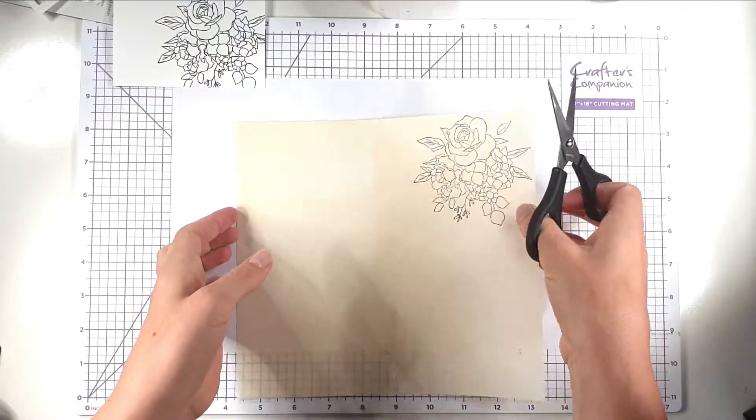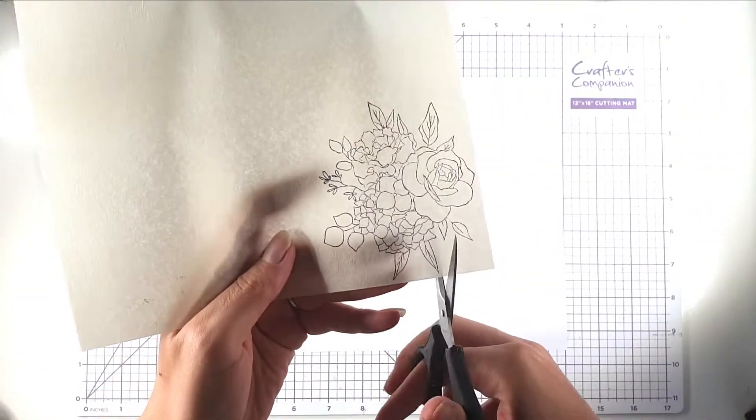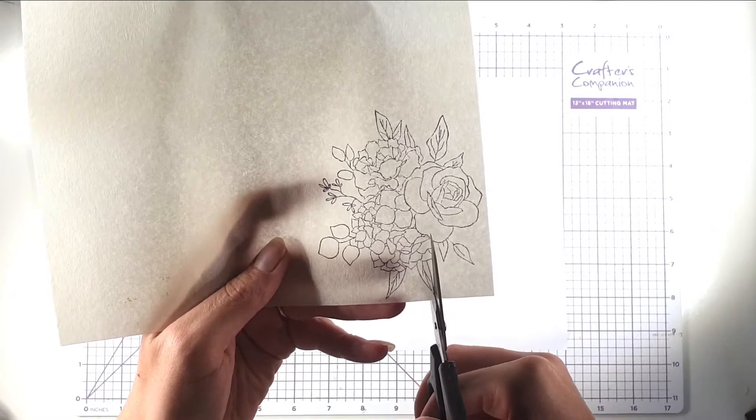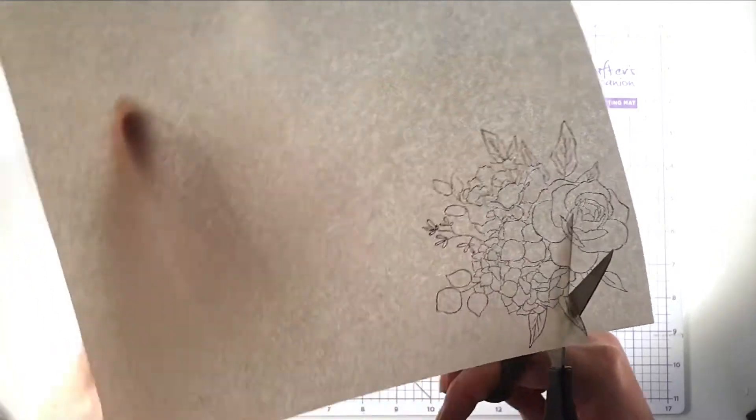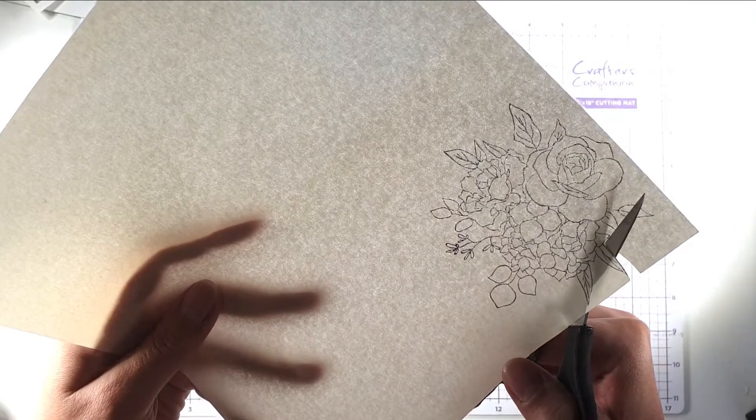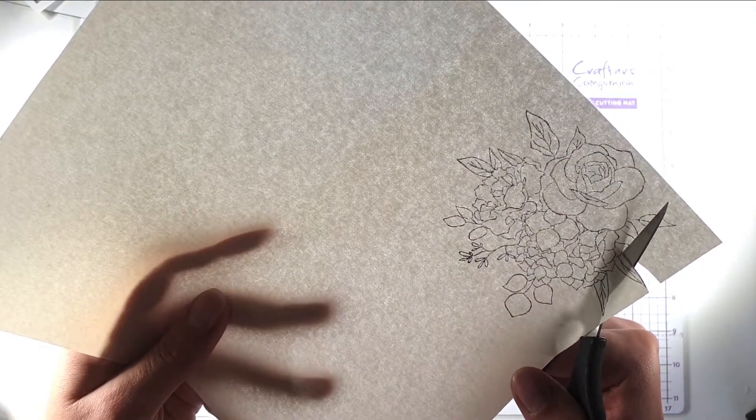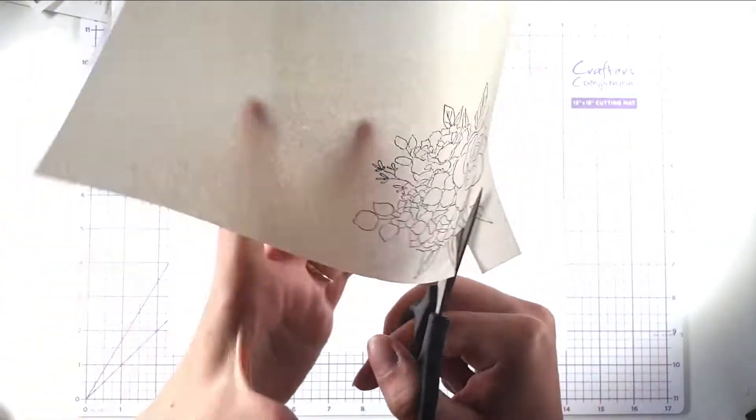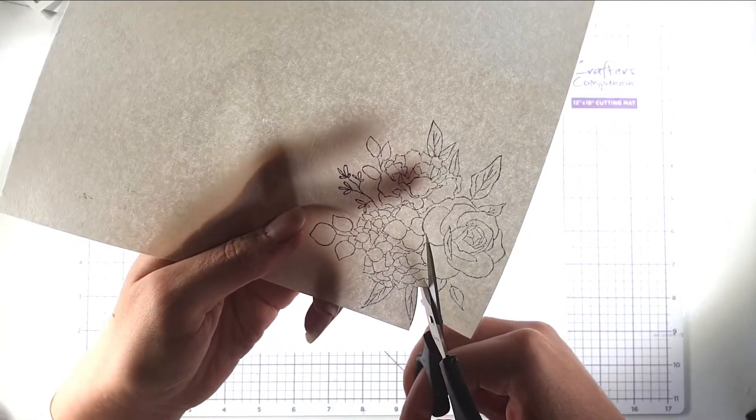Now I'm just going to cut this out and I'm going to cut it right on the line. You want this to be cut out really nicely because otherwise the blending that we're going to do in a minute won't go right up to the line of the stamping.